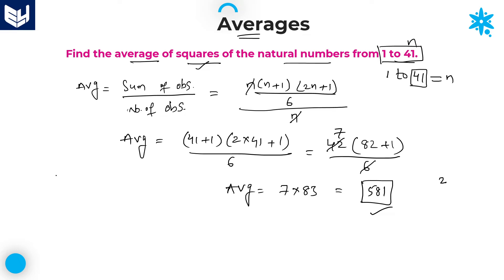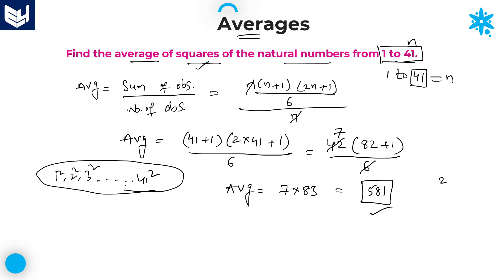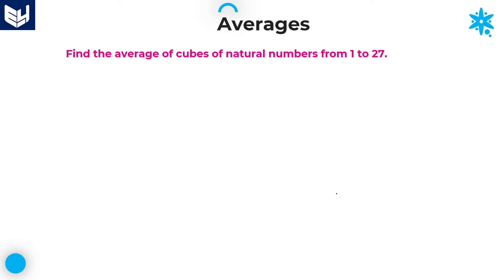The average of squares of natural numbers from 1 to 41 — that is, 1², 2², 3² and so on up to 41² — the average of all these numbers is 581. That is the required answer for this question. Let's move on to the next question.